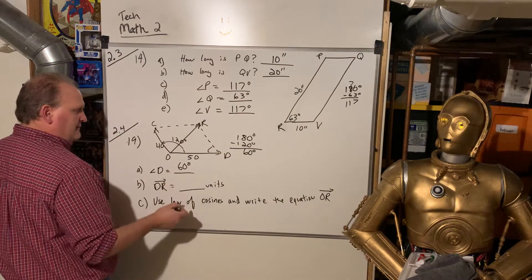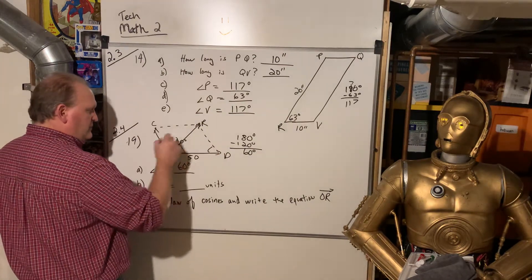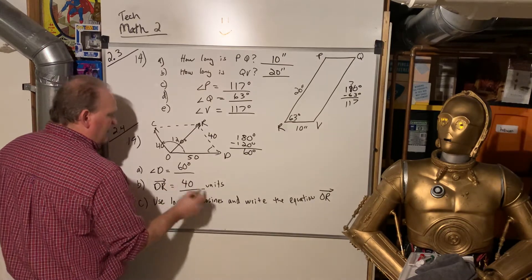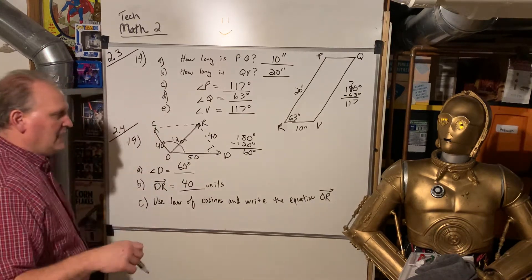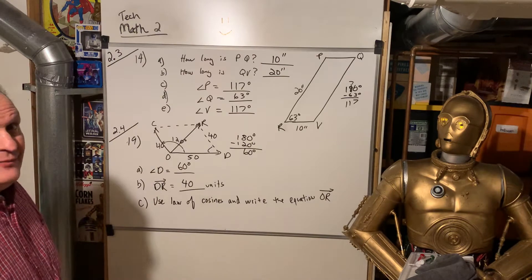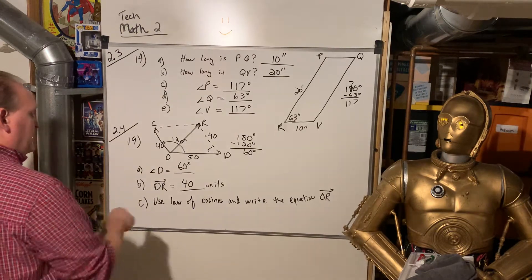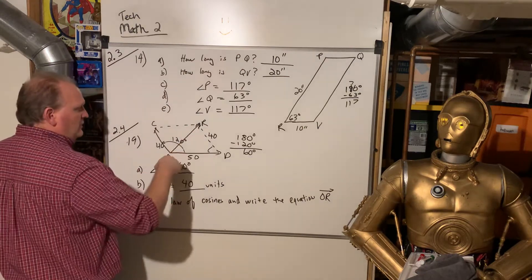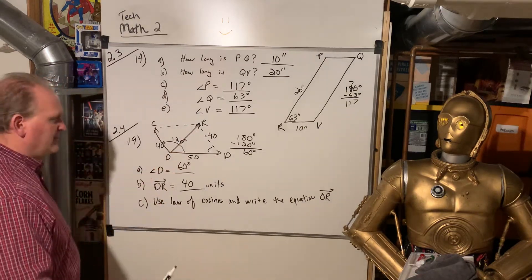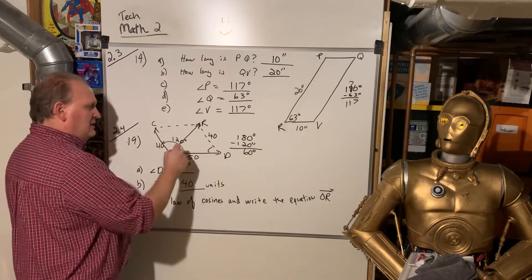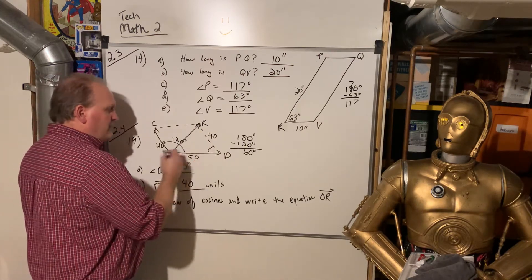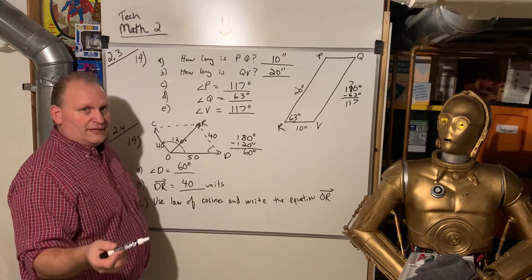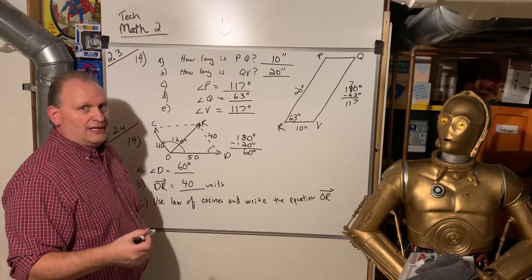They said, well, then DR, DR would be 40. And now they want you to go way back again into Tech Math 1. We did the law of cosines. Basically, use the law of cosines and write out an equation for OR, but don't actually find OR. And so I will do that. But in reality, if we were trying to solve this resultant vector, I would be using, like what I showed you before, the polar to rectangular, rectangular to polar. That's the easiest way.